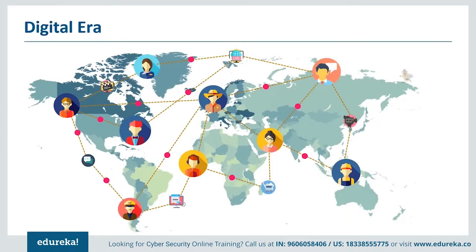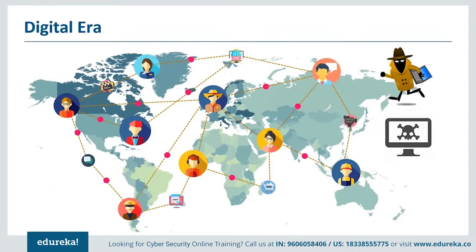Cyber criminals are in the business of stealing sensitive data like contact numbers, credit card information, and bank account details, which they sell to third parties for profit. There are also malicious hackers with personal enmity hacking into systems to expose vulnerabilities, and hacktivists who access systems opposed to their ideology. People exploit vulnerabilities in the internet's architecture to initiate what we call cyber attacks.